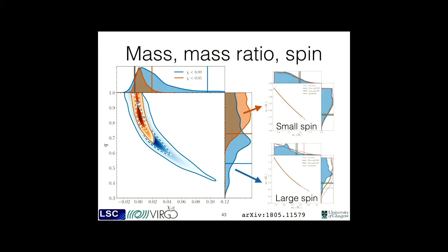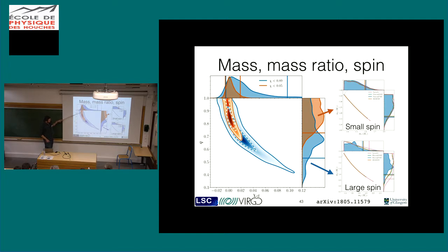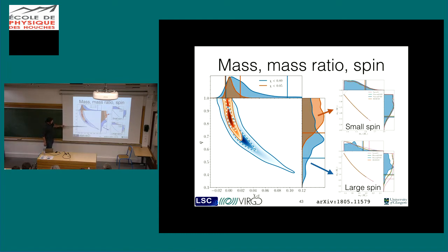Looking at this in another picture, I can show you the same sort of constraints. This time we've got the mass ratio Q, which is M2 over M1, and the chi-effective parameter. You can see that chi-effective is allowed in the binary black hole model where we don't constrain it - the data limits it around 0.1 or so, rather than allowing it to go up to 0.89. And then if you make the additional cutoff at 0.05, you get a more constrained distribution.